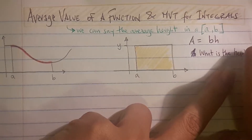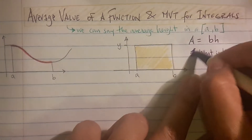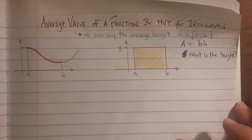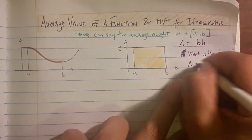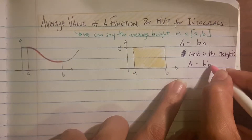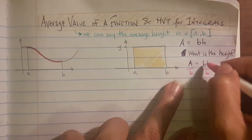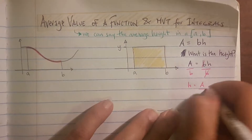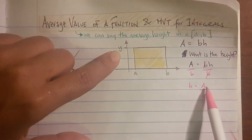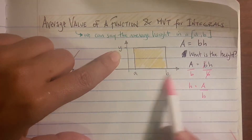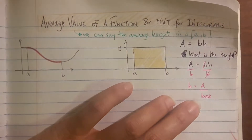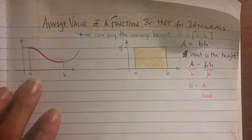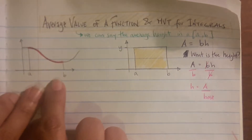If I told you to solve for the height, what would you do? You'd take the formula and divide everything by the base to get the average height by itself. The average height equals area divided by base. I'll write out 'base' instead of b so we don't confuse it with the endpoint b of the interval. If you look back at the curve, that same idea applies.